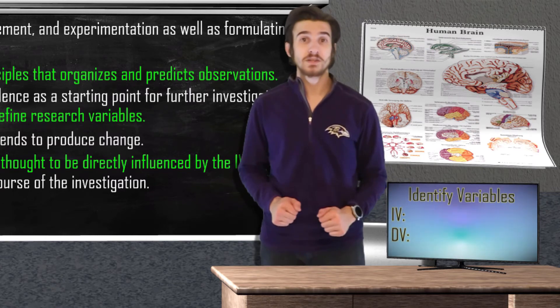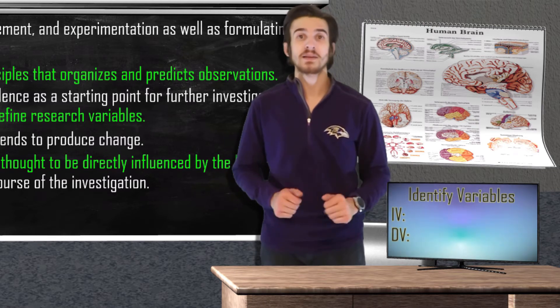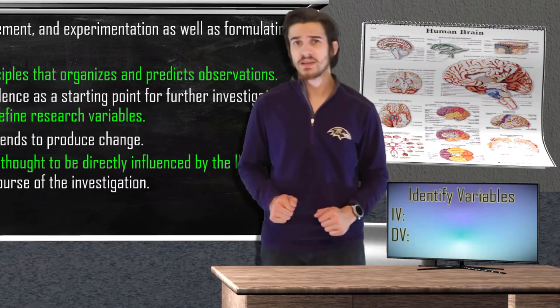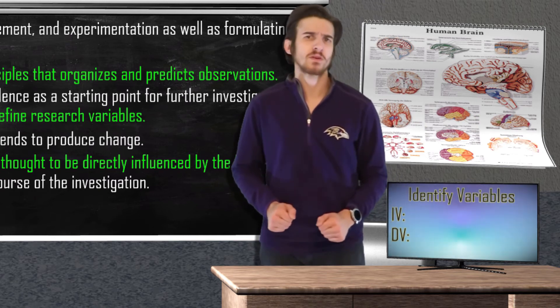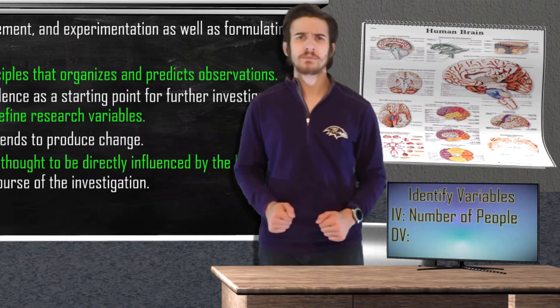In our experiment, we set the conditions for how many people are present when a bystander needs help. We set the group settings as an individual, a pair of friends, or a larger group of people. So our independent variable is just going to be the number of people.